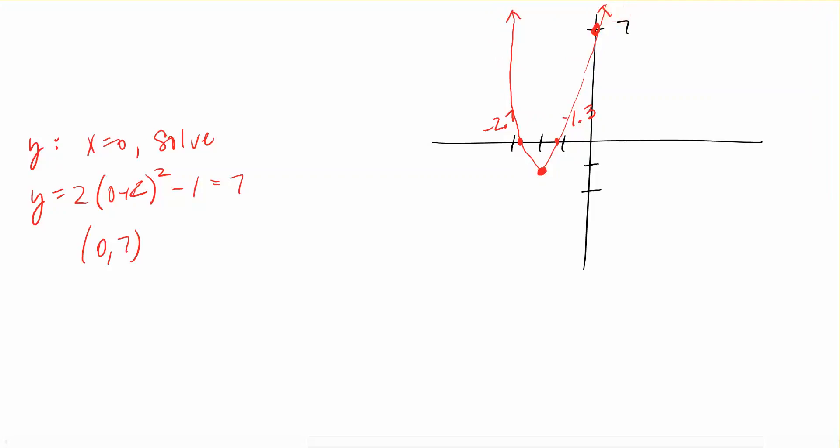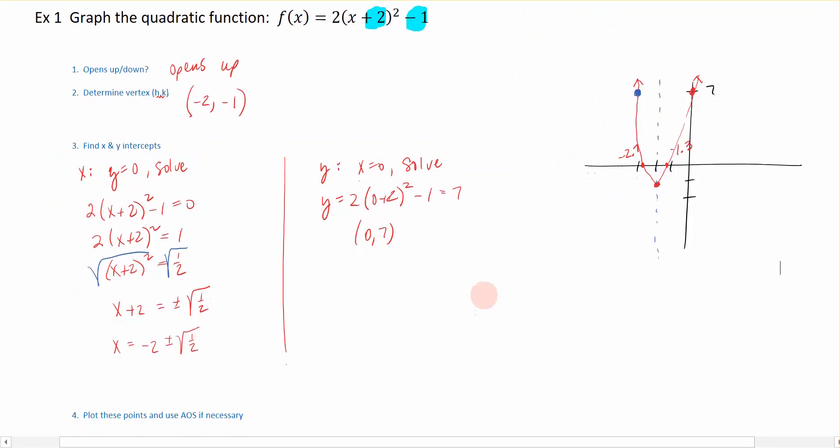Now because I know that my quadratic, or parabola, is symmetric along the axis of symmetry, which passes directly through that vertex, if I wanted to reflect this (0,7) over here to the other side to get a better picture, I could have done that to be able to draw it. And that's what the axis of symmetry can get me if I need another point to be able to draw. So these are the steps that you're going to go through when you are graphing a quadratic function given the standard or vertex form.